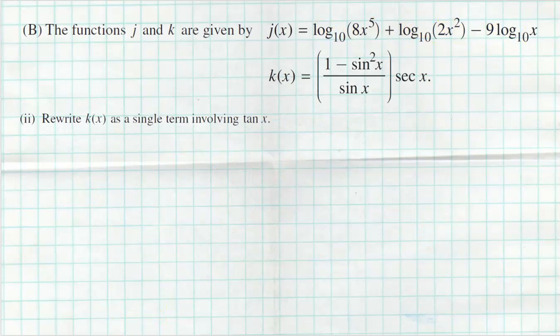Part two of section B says to rewrite k of x as a single term involving tangent. Anytime I see ones and squares I think about Pythagorean identities. I know cosine squared of x plus sine squared of x equals one, so one minus sine squared of x equals cosine squared of x.